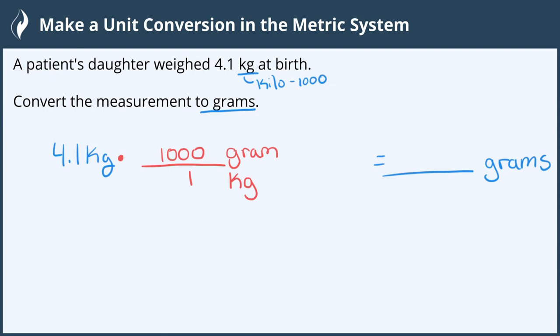Now that we're all set up, we can go ahead and multiply. In this case, we can simplify first. The kilograms cancel out because there's one on top and one on bottom, and now we can just multiply.